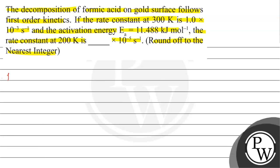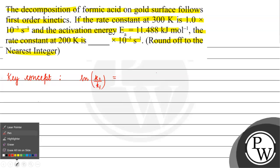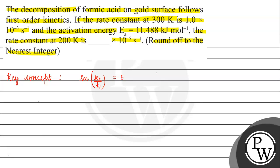The key concept for this question is: we have ln(K2/K1) = (Ea/R) × (1/T1 − 1/T2). K2 is the rate constant for the second reaction, K1 is the rate constant for the first reaction, Ea is the activation energy, R is the universal gas constant, T1 is the temperature for the first reaction, and T2 is the temperature for the second reaction.